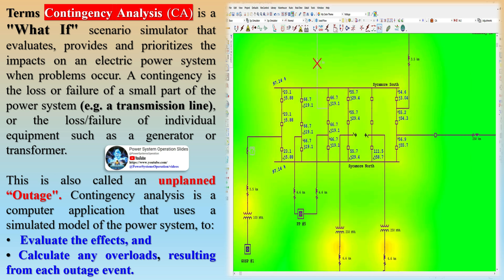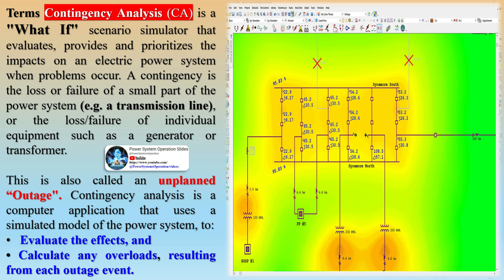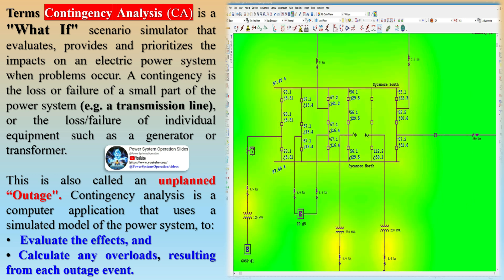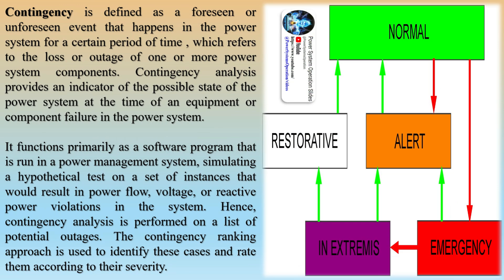This is also called an unplanned outage. Contingency analysis is a computer application that uses a simulated model of the power system to evaluate the effects and calculate any overloads resulting from each outage event. Contingency is defined as a foreseen or unforeseen event that happens in the power system for a certain period of time, which refers to the loss or outage of one or more power system components.